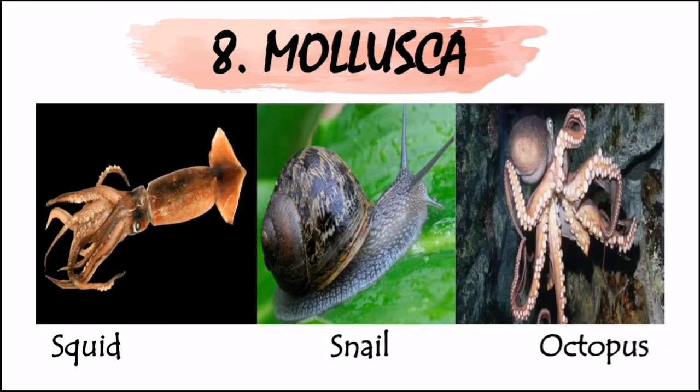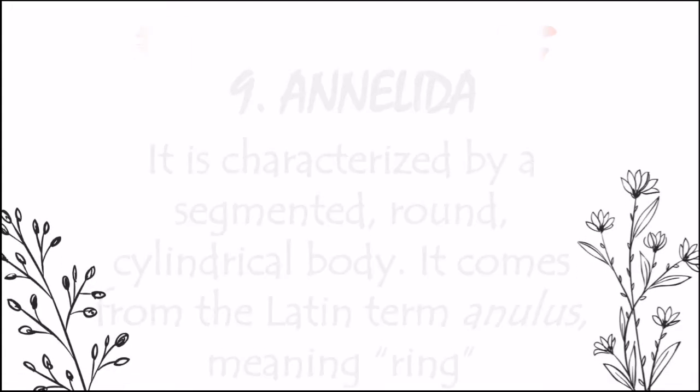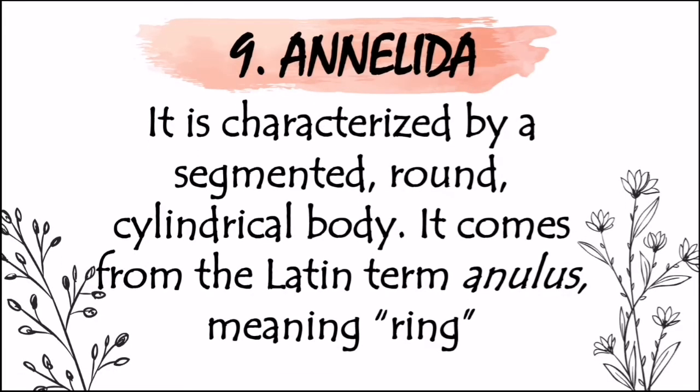For the ninth phylum, Annelida is characterized by a segmented, round, cylindrical body. It comes from the Latin term annulus, meaning ring. An example of phylum Annelida are leeches and earthworms. They are practically segmented worms.